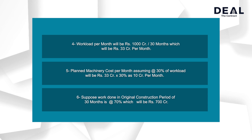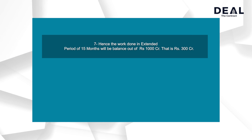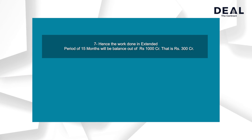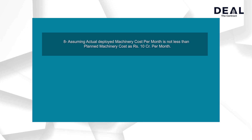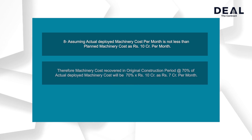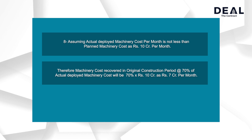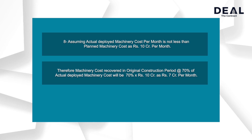6. Suppose work done in the original construction period of 30 months is at the rate of 70%, which will be Rs. 700 crore. 7. Hence, the work done in the extended period of 15 months will be the balance out of Rs. 1000 crore. 8. Assuming actual deployed machinery cost per month is not less than the planned machinery cost, i.e. Rs. 10 crore per month. Therefore, the rate of loss of machinery cost will be Rs. 10 crore per month less Rs. 7 crore per month.